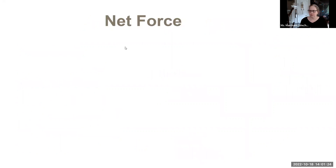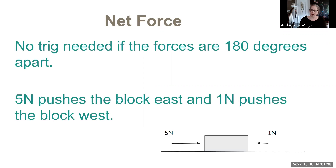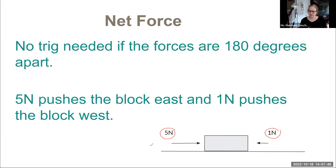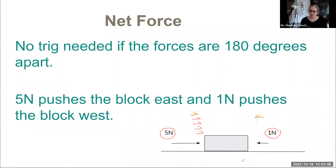Here we're talking about net forces. If we're going this direction and we're accelerating, we have a net force this direction. If there is a block on a table being pushed five newtons to the east and one newton to the west, the five newton side is going to win. If I picture five newtons pushing in one direction and one newton pushing back, those one newtons would cancel and I'd be left with four newtons to the east. That's your resultant or net force.